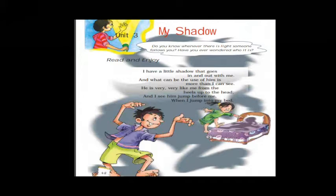Second stanza: 'He is very, very like me from the heels up to the head, and I see him jump before me when I jump into my bed.' In this stanza, the poet says his reflection is totally like him from head to toe. Whenever he goes to sleep, his reflection jumps or hops into the bed before him. In the picture, you can see the poet's reflection on the bed.